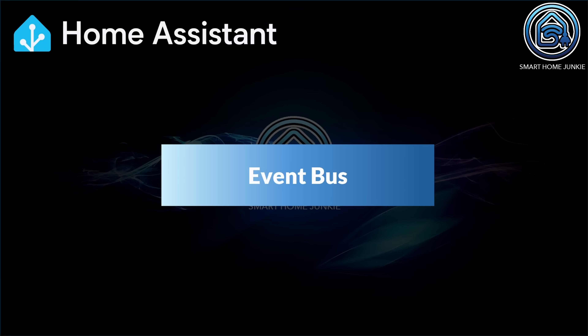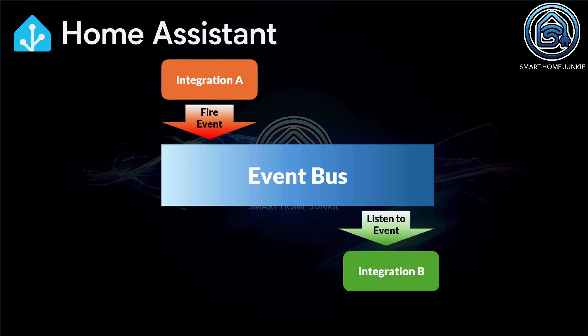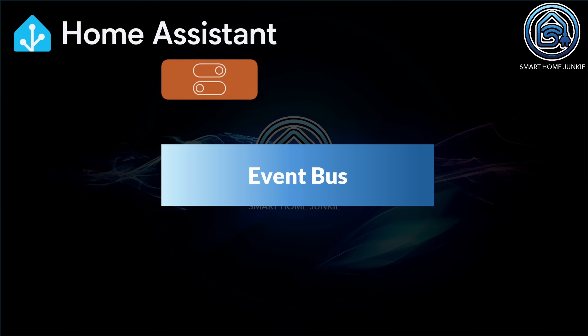Before we start building the automation, I want to briefly explain what events actually are. The heart of Home Assistant revolves around an event bus. All integrations can either fire events through this event bus or listen to it. So Home Assistant continuously monitors this event bus, and when an event occurs, integrations listening to that event can immediately take action. As a simple example, imagine a button and a lamp — as soon as you press the button, the lamp should turn on.